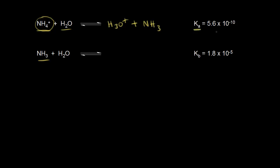The Ka for this reaction is 5.6 times 10 to the negative 10. Now let's look at NH3, which we know is a weak base and is going to take a proton from water, therefore forming NH4+. If we take a proton from water, we're left with OH minus. Since we talked about a base here, we're going to use Kb, and Kb for this reaction is 1.8 times 10 to the negative 5.